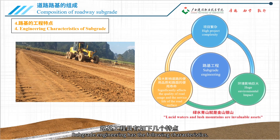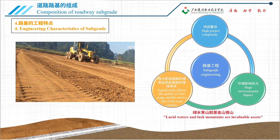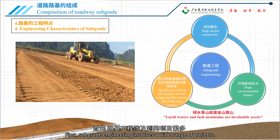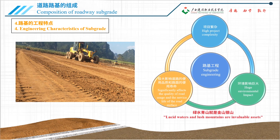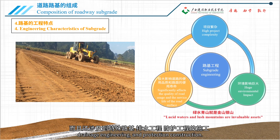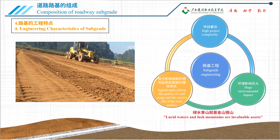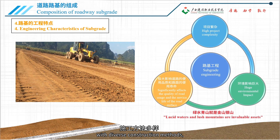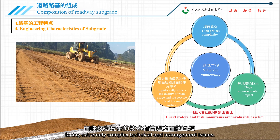Subgrade engineering has the following characteristics. First, subgrade engineering involves a wide range of projects. It not only includes the construction of general subgrade, but also involves special subgrade, drainage engineering, and protection construction. The construction conditions are complex and variable, with diverse construction methods facing extremely complex technical and management issues.